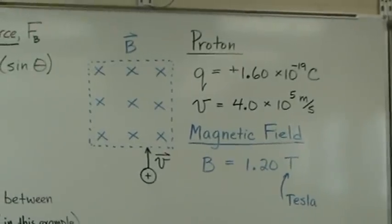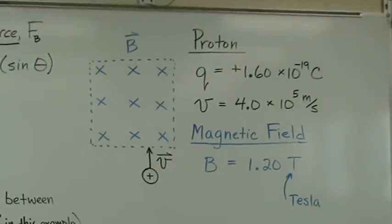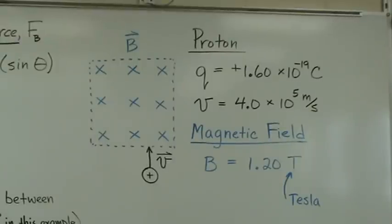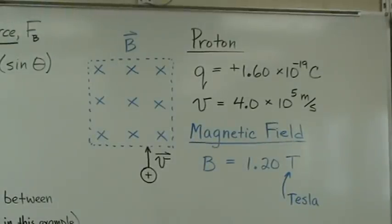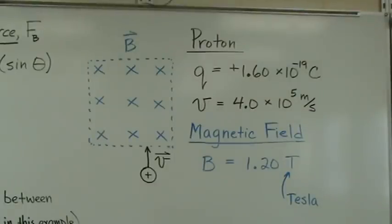Here's a picture of what we have. The magnetic field is directed into the board. We can see the tail end of the arrow as the arrow enters the board. The proton is moving directly upward and then will enter that magnetic field.